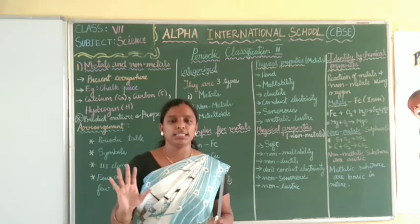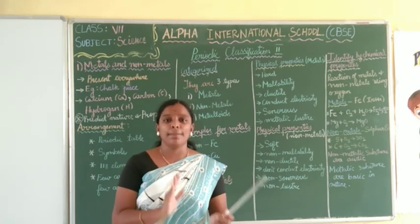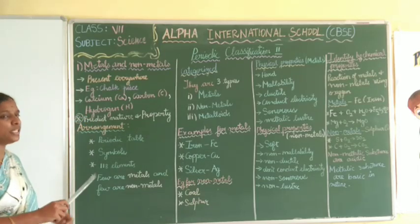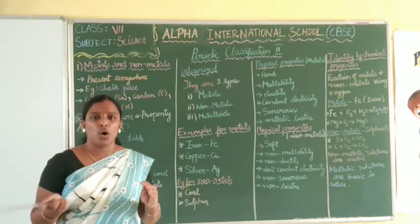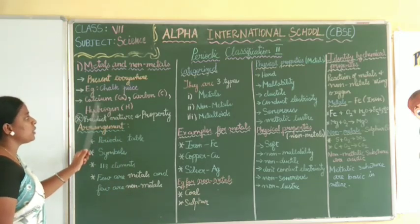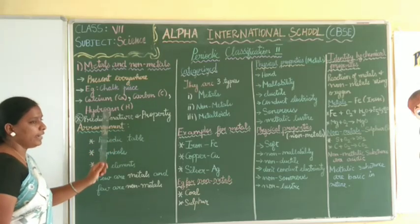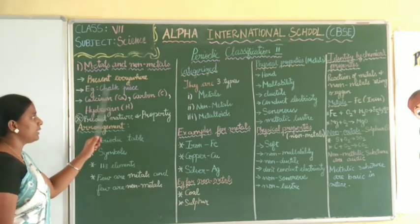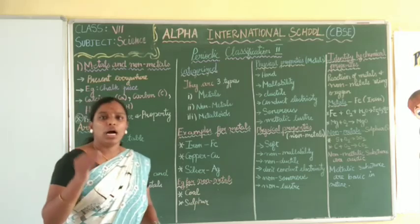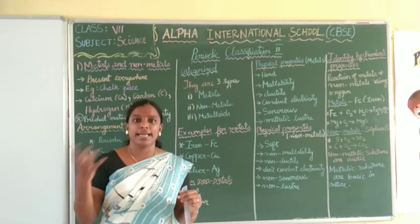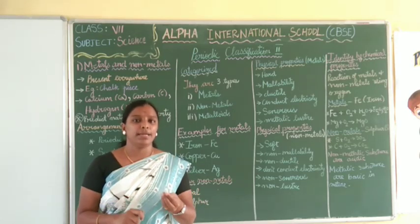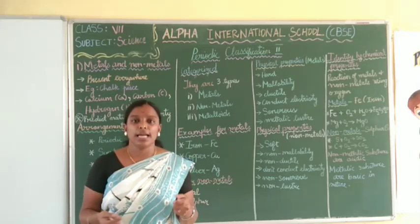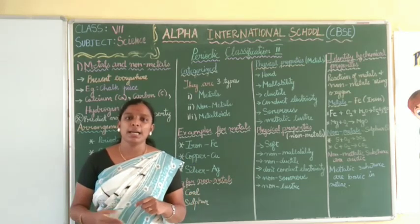Whatever object is present around you is made up of either metal or non-metal. For example, a chalk has calcium, carbon, and hydrogen — it is a gas, so all the particles will have vapour. So even a chalk has three elements. Each one of you just think and say how many elements are taken up in your day-to-day life. All the things in our day-to-day life are made up of elements which are present in a periodic table.